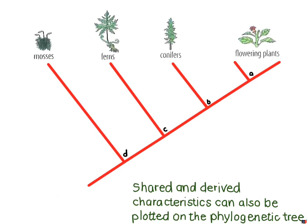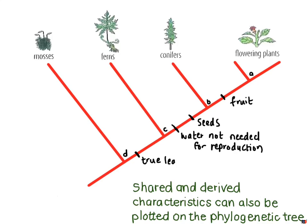It's quite useful to use these diagrams to plot what we call shared or derived characteristics. All of these groups have various features and characteristics you've been exploring in class. We can take those characteristics and map them onto one of these trees to show how these groups have changed and evolved through time. For example, water not being needed for reproduction first appears after the ferns, and seeds are first found only in the conifer–flowering plant group.